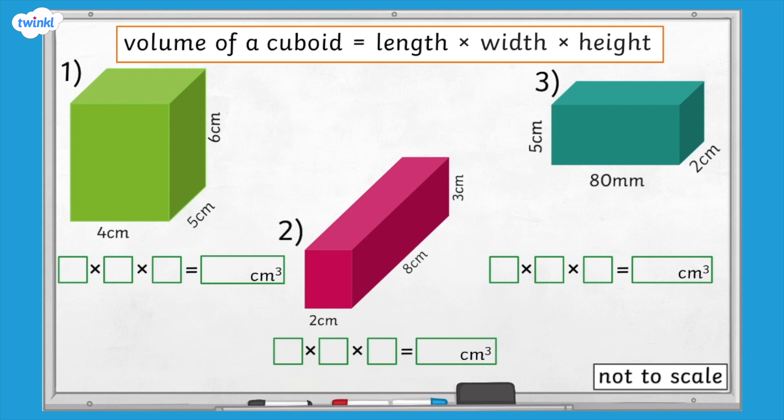Have you finished? Well done, here are the answers. For this cuboid, all of the side lengths are measured in centimetres, so we can use the formula length multiplied by width multiplied by height. This gives us an answer of 120 cubic centimetres.